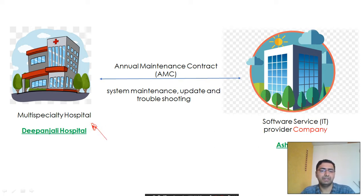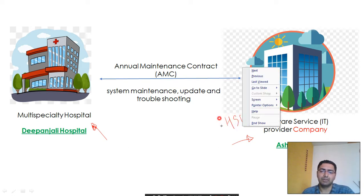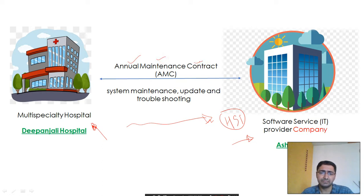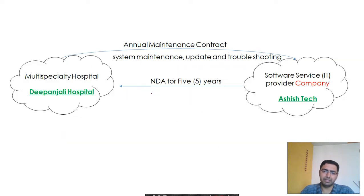Let's take an example. Suppose there is a company called Dipanjali Hospital and another company called Ashish Tech. Ashish Tech has vast experience in the hospitality service industry, and because of this credential, Dipanjali Hospital gave them an AMC — Annual Maintenance Contract — under which Ashish Tech needs to do system maintenance, updates, and troubleshooting. There was one key provision in the contract: an NDA.